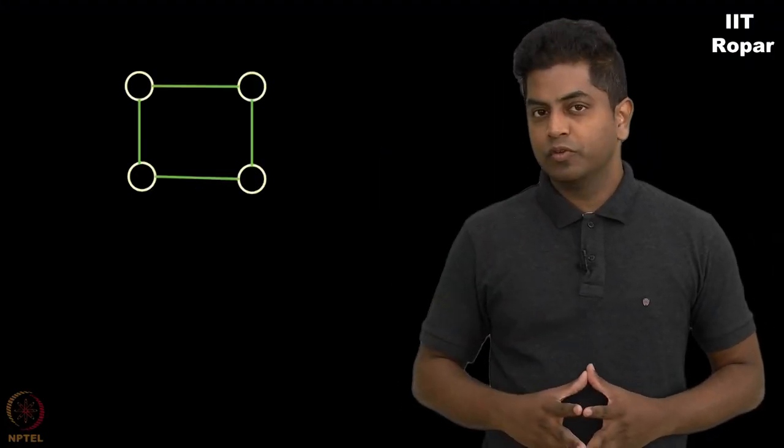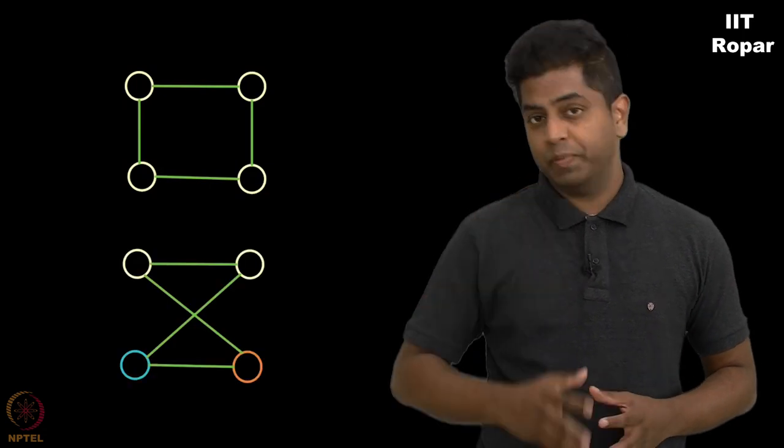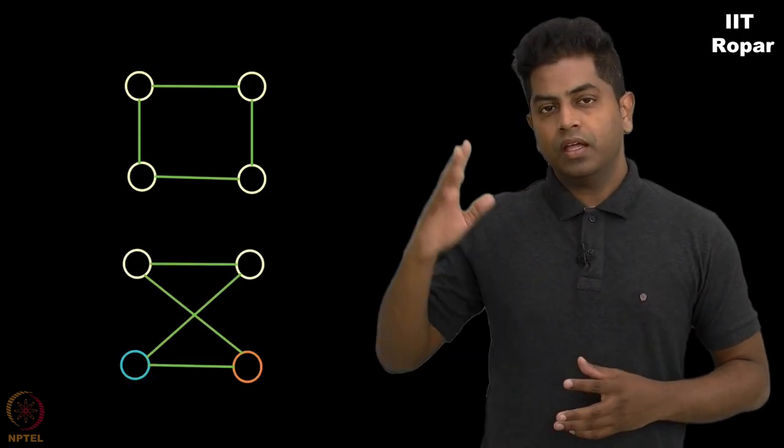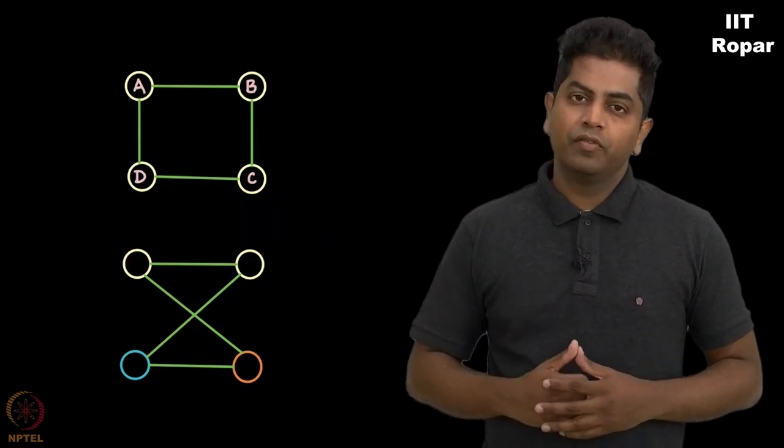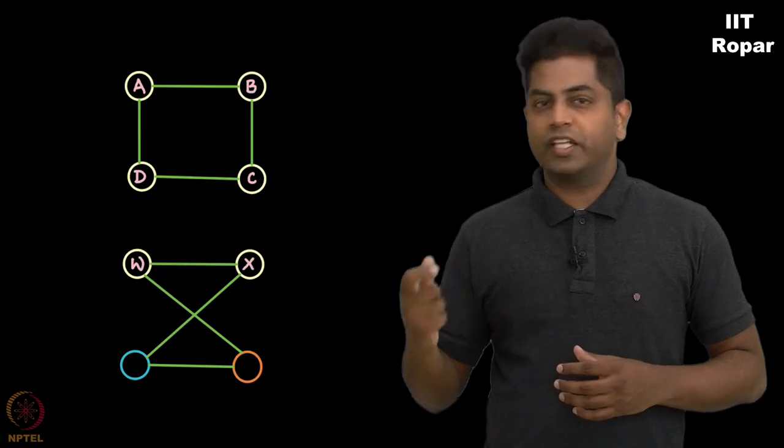Do you see these two friendship networks between four people? Here are our friends A, B, C, D, and there here again we have four other friends W, X, Y, Z.